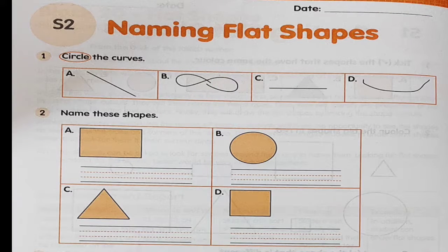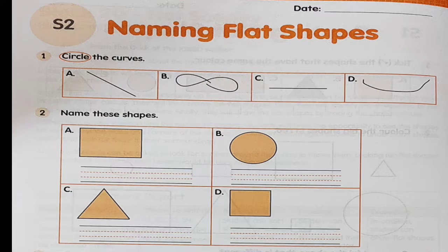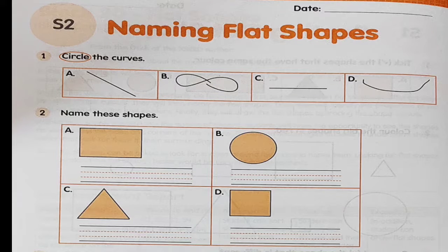So students, today you have learned what the shape of a triangle looks like, what the shape of a circle looks like. Now, which shape is called a circle? Which one is called a square? Which shape is called a rectangle? And which shape is called a triangle? You've also learned which lines are called curved lines and which lines are straight. I want you to open your maths workbook, volume 3, to page 18, where you'll find S2, naming flat shapes.